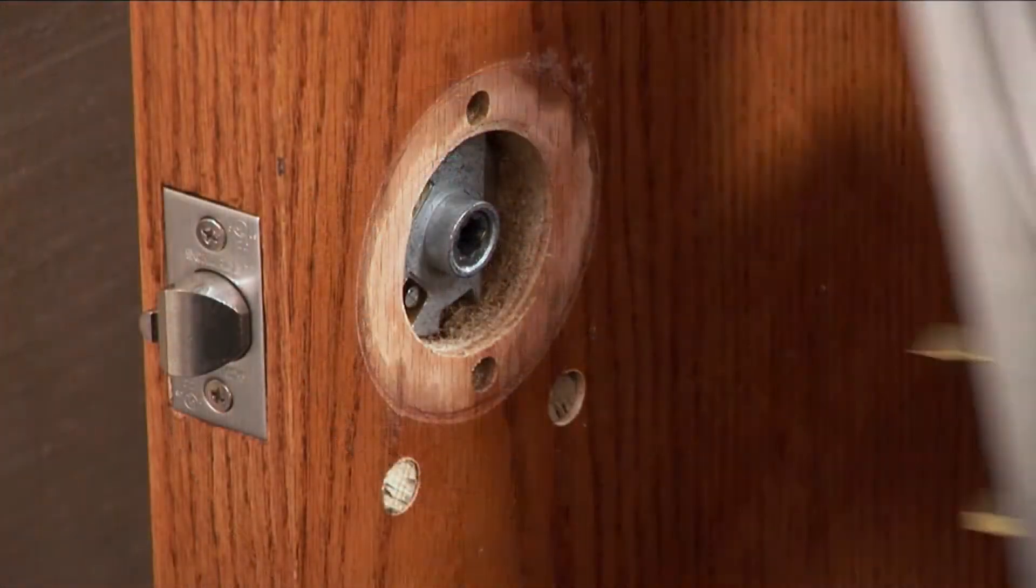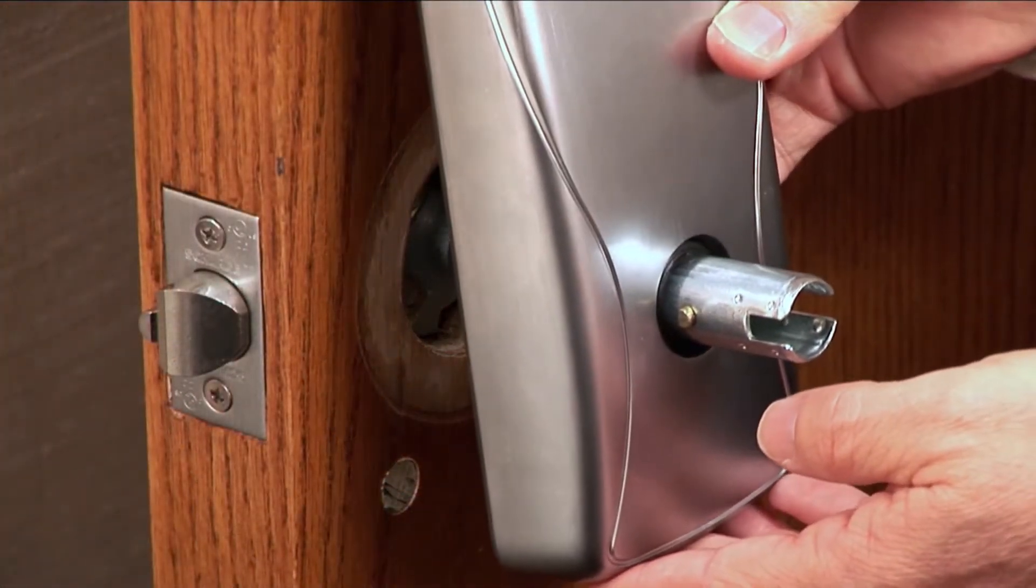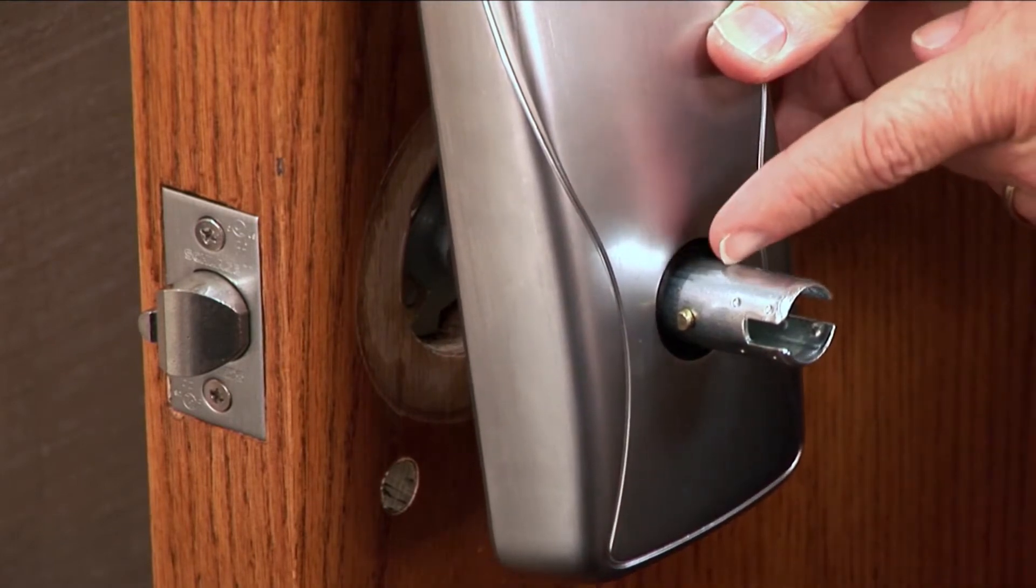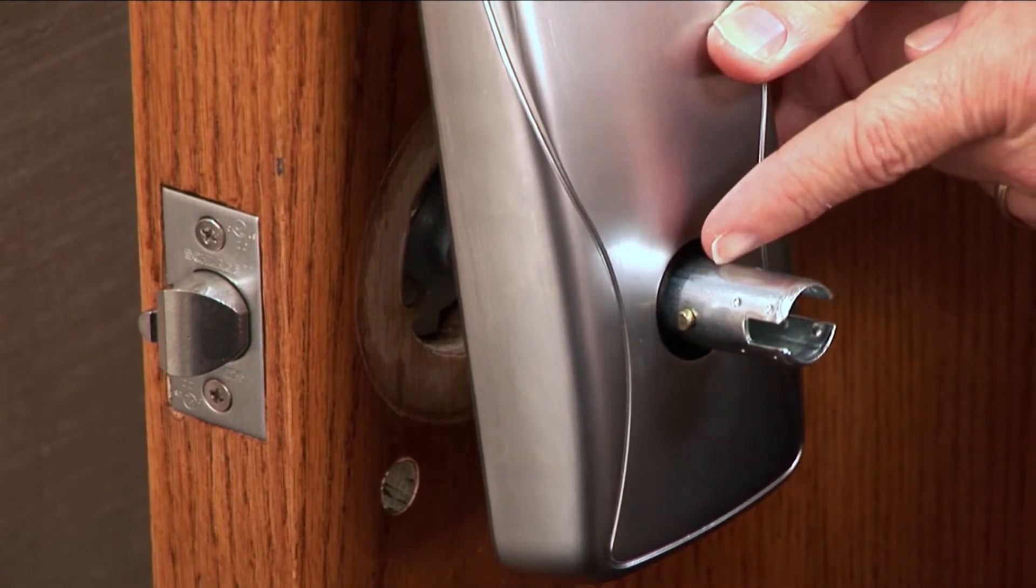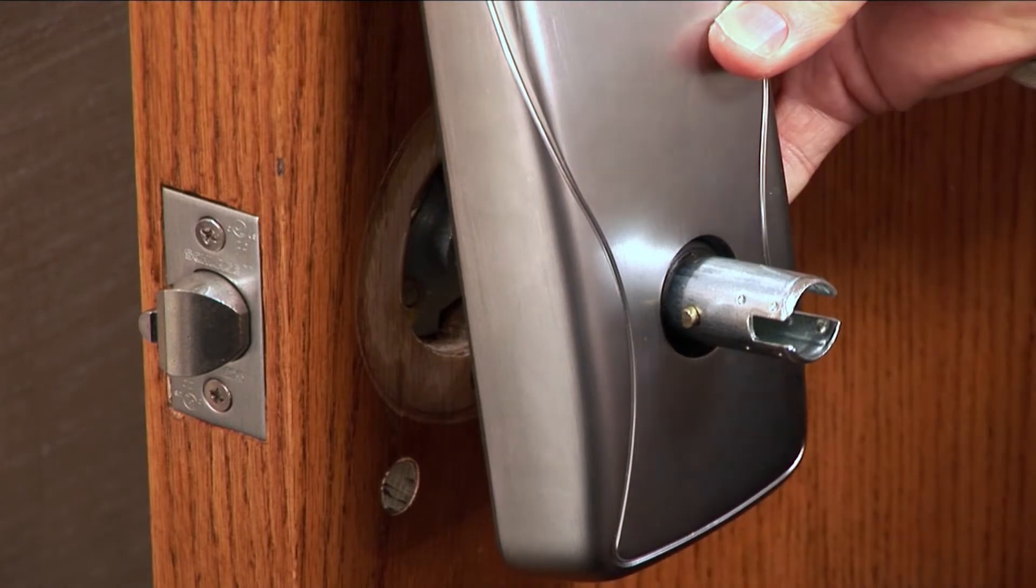Next, check the handing of the outside assembly. The knob stop pin should be pointing toward the latch edge of the door. If the handing is not correct, re-hand it now.